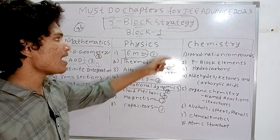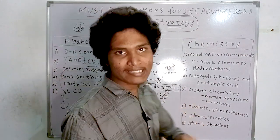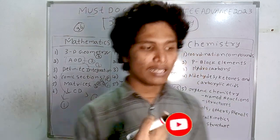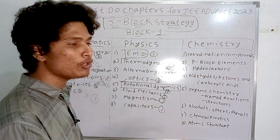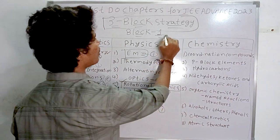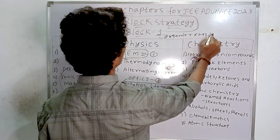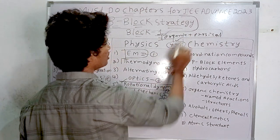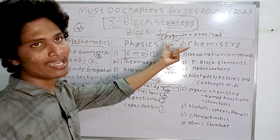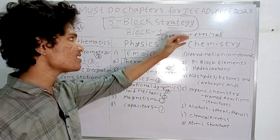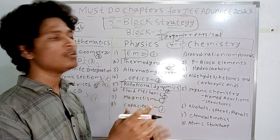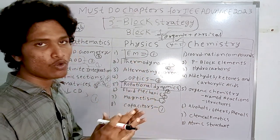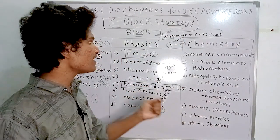For block one chemistry: when I wrote JEE Advanced 2022, I thoroughly prepared organic chemistry. But due to less preparation in physical chemistry, I couldn't solve all the organic questions because there was a mixing of organic and physical chemistry — about four to five mixed questions.